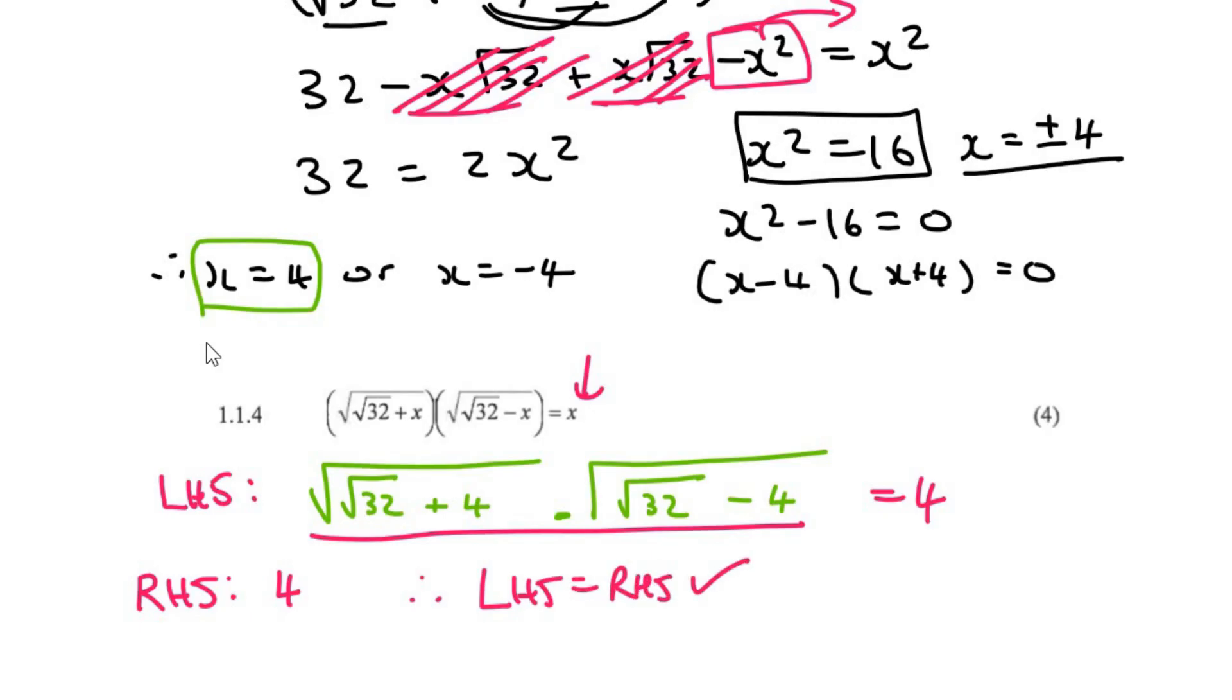I would then do the same process using negative 4, and so that would become negative 4. Be careful over here, because there's already a negative, and your number is a negative 4, it's actually going to turn into positive 4. I would then type all of this on the calculator, and that's going to give me 4.